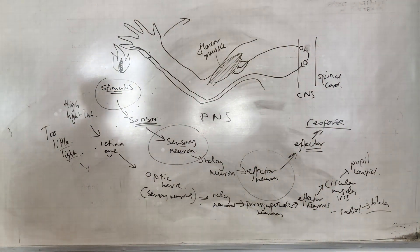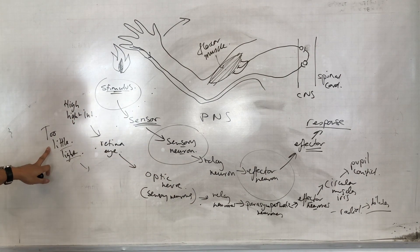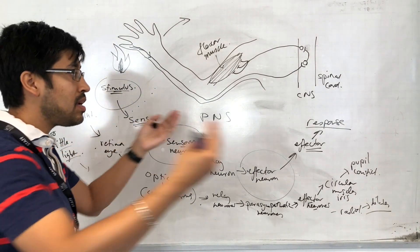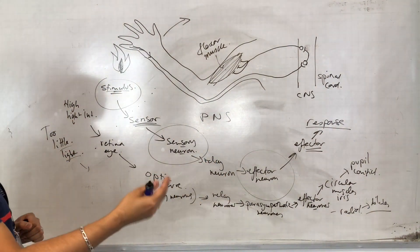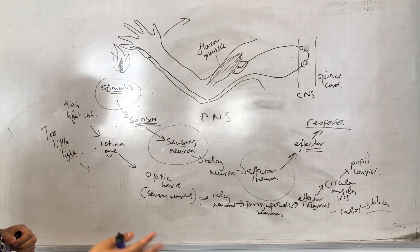The pupil dilates, so our response to too little light is the pupil dilating, allowing more light to come in, again allowing us to generate a proper image on the retina.